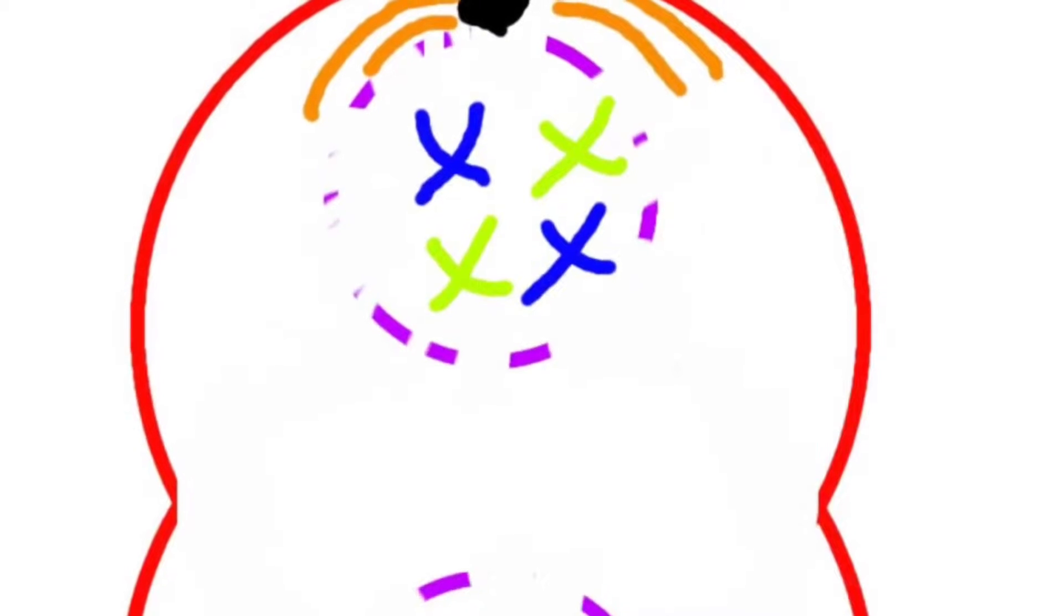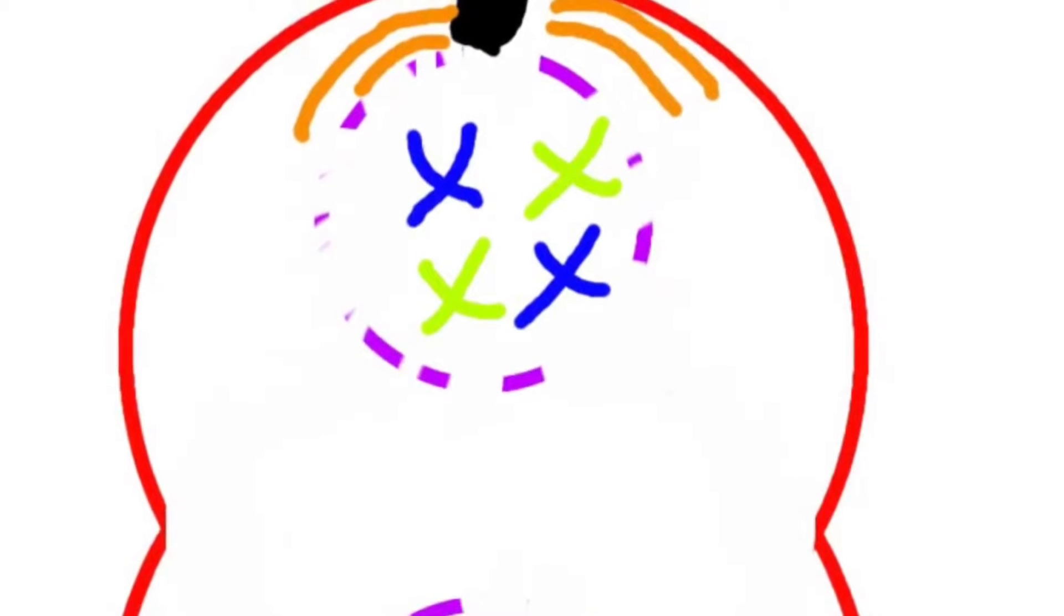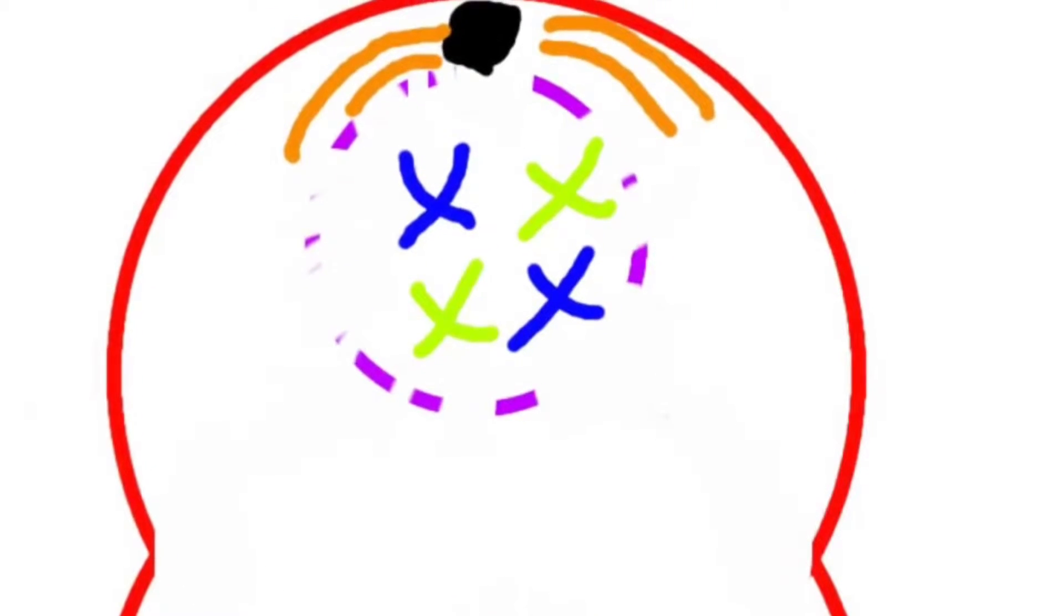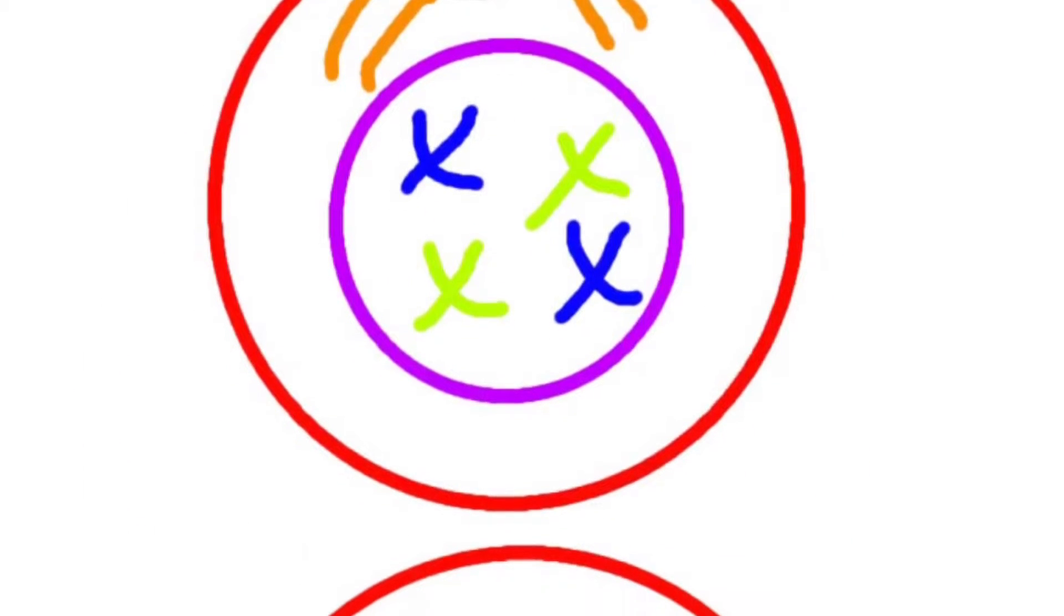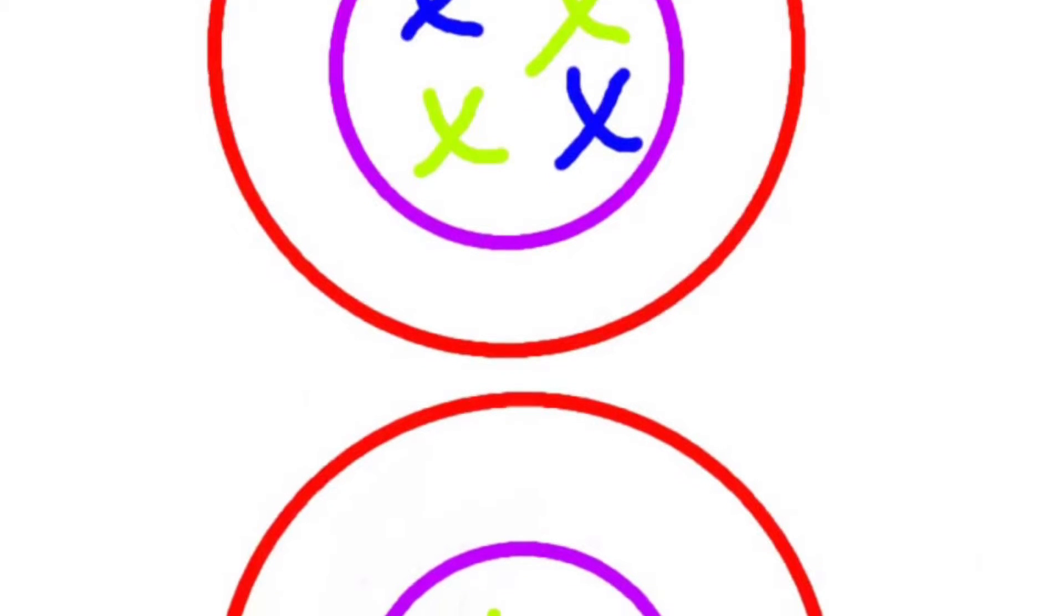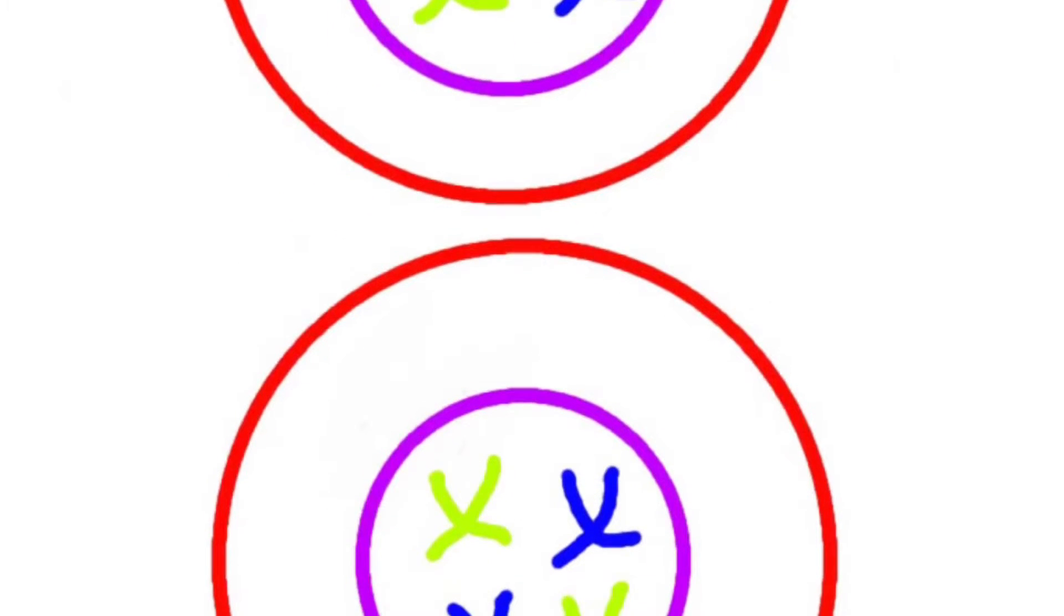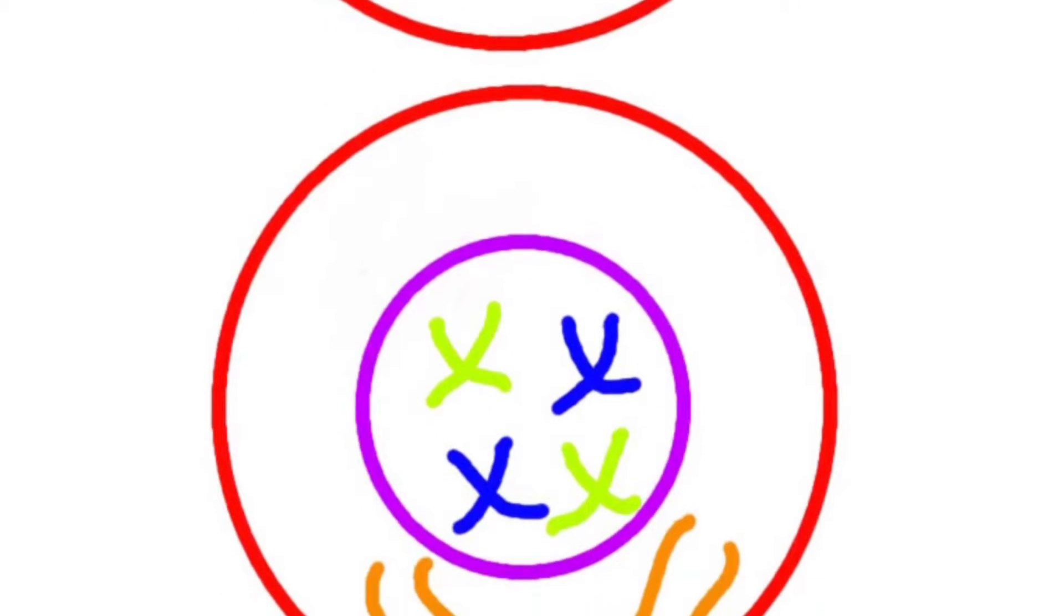The cell membrane then completes construction in telophase. Nuclear membranes form around the separated chromosomes to protect them. Mitosis is now completed. There are two daughter cells with the same structures and number of chromosomes as the parent cell.